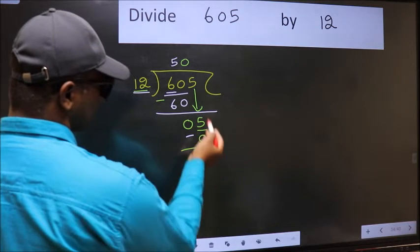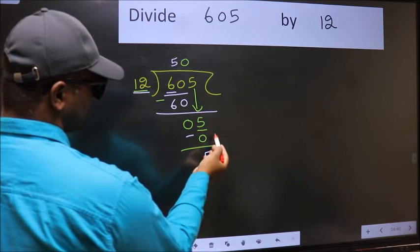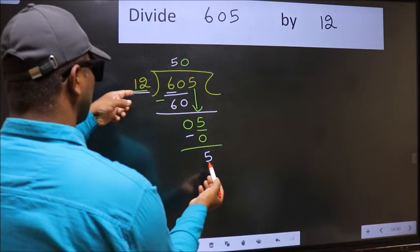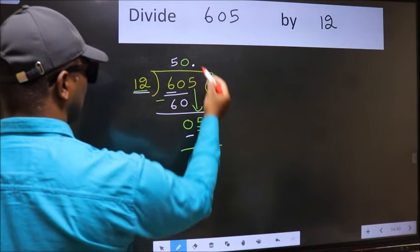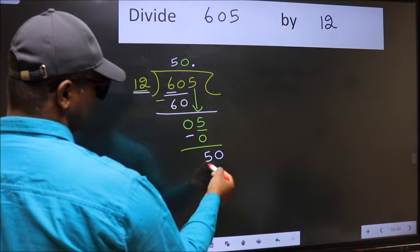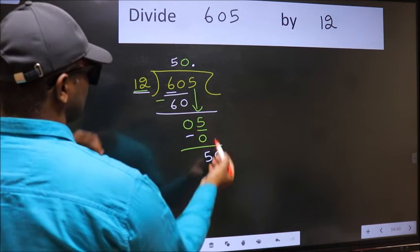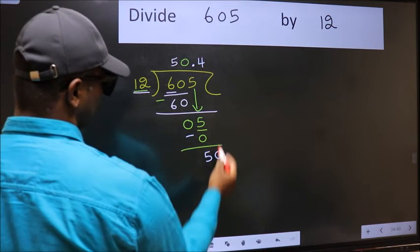Over here, we did not bring any number down, and 5 is smaller than 12. So now you can put dot and take 0. So 50. A number close to 50 in 12 table is 12 fours 48.